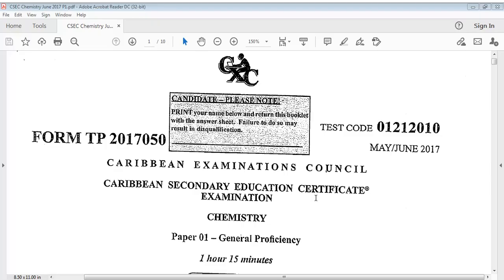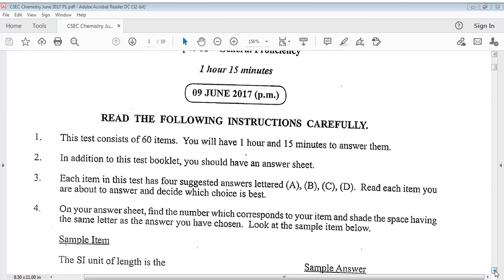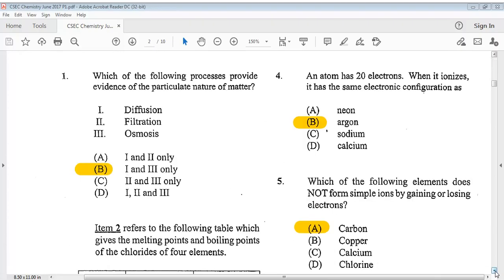So today we'll be looking at the CSEC Chemistry May June 2017 Paper 1. A good friend of mine has worked out the solutions to this paper and so I wanted to present this video to you so it could be of assistance to those students who are doing the CSEC Chemistry subject. For some of the questions I'll be reading it and for some you can just look on your screen and you will see the answers that will be provided. So let's get into this paper.